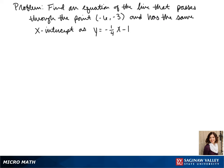Welcome to another day of algebra. Today we'll be finding an equation of the line that passes through the point (-6, -3) and has the same x-intercept as y = -1/4x - 1.